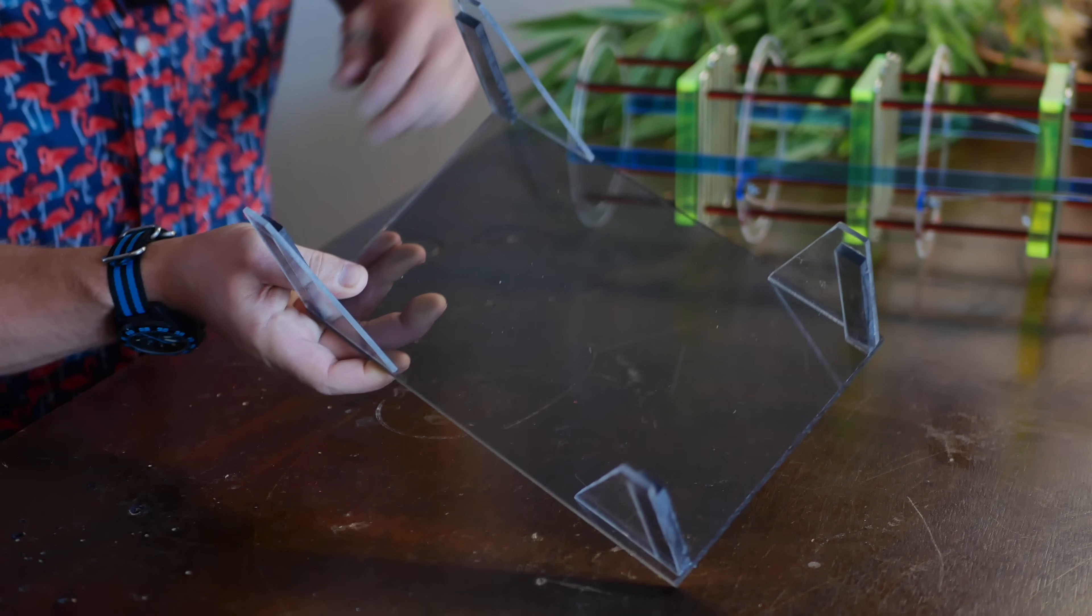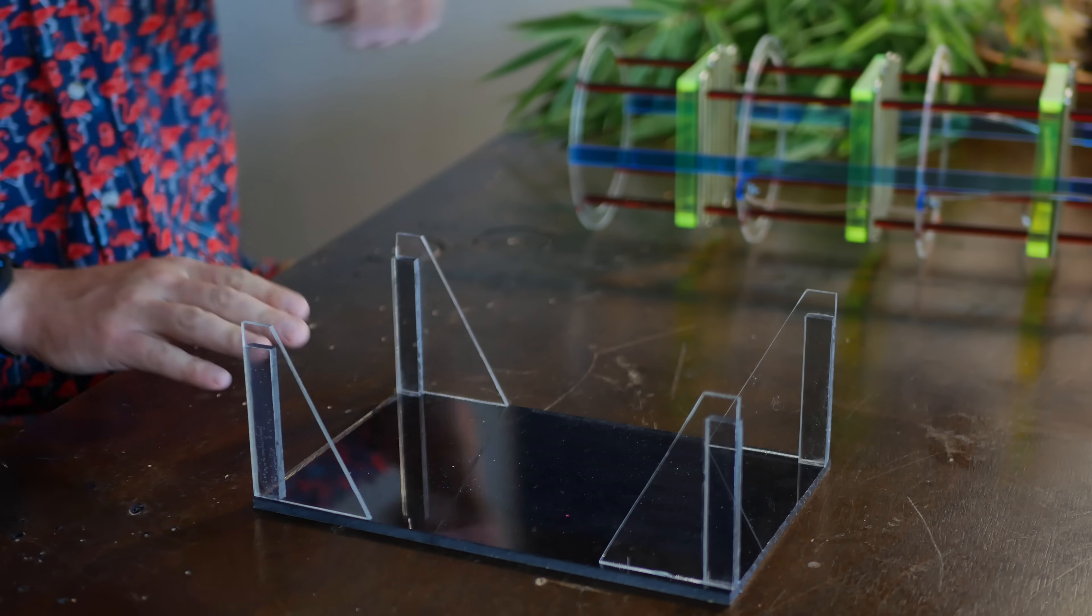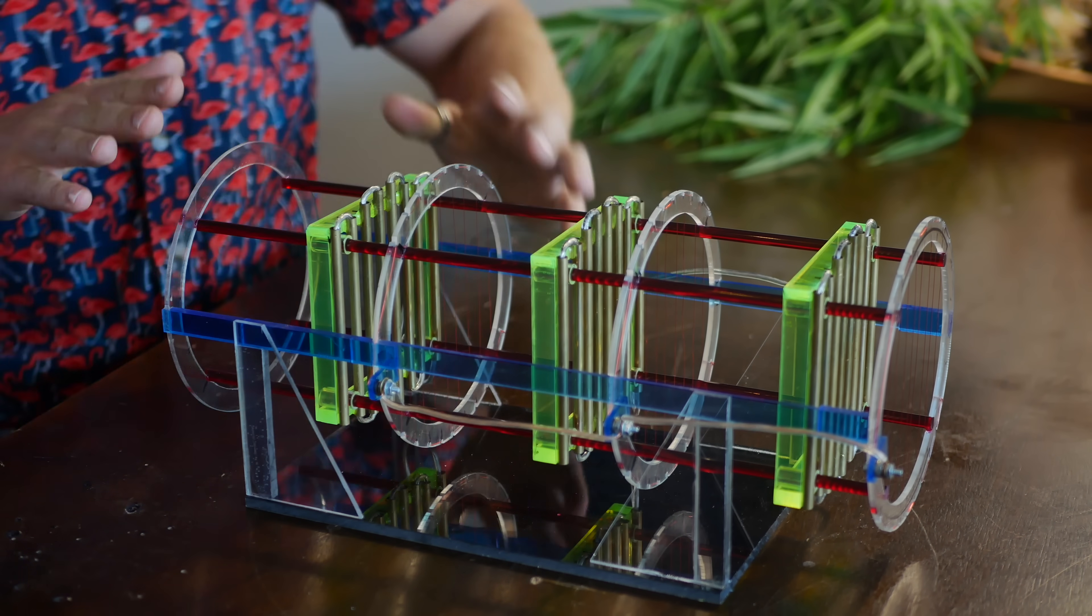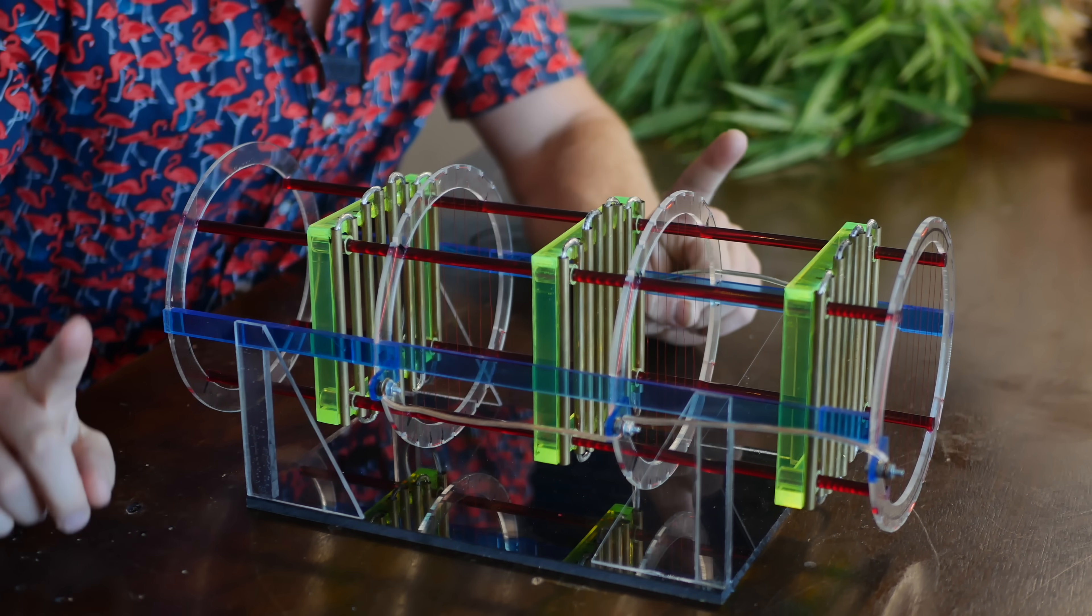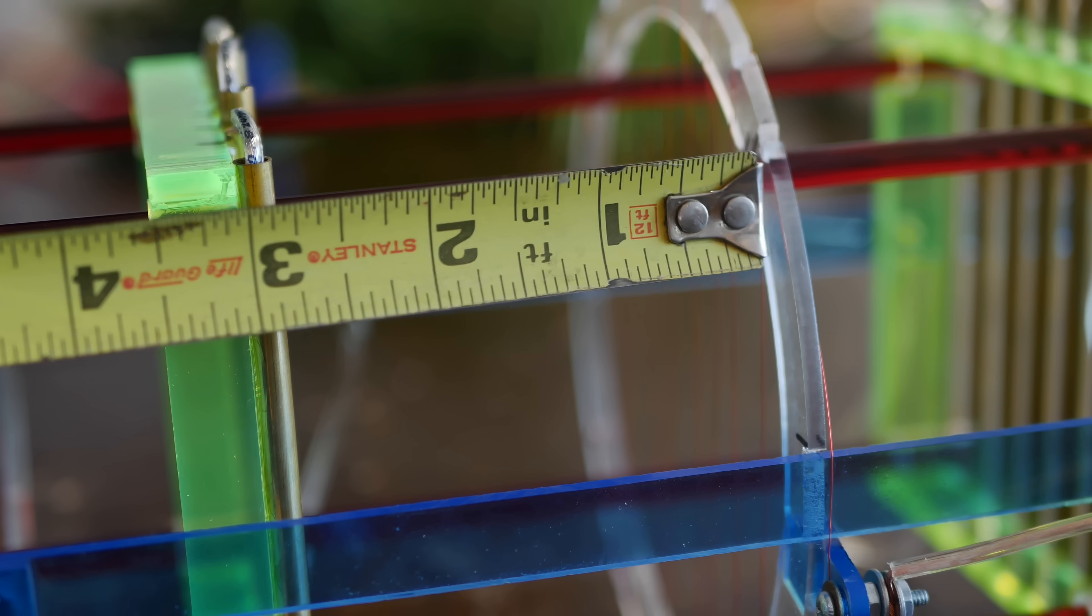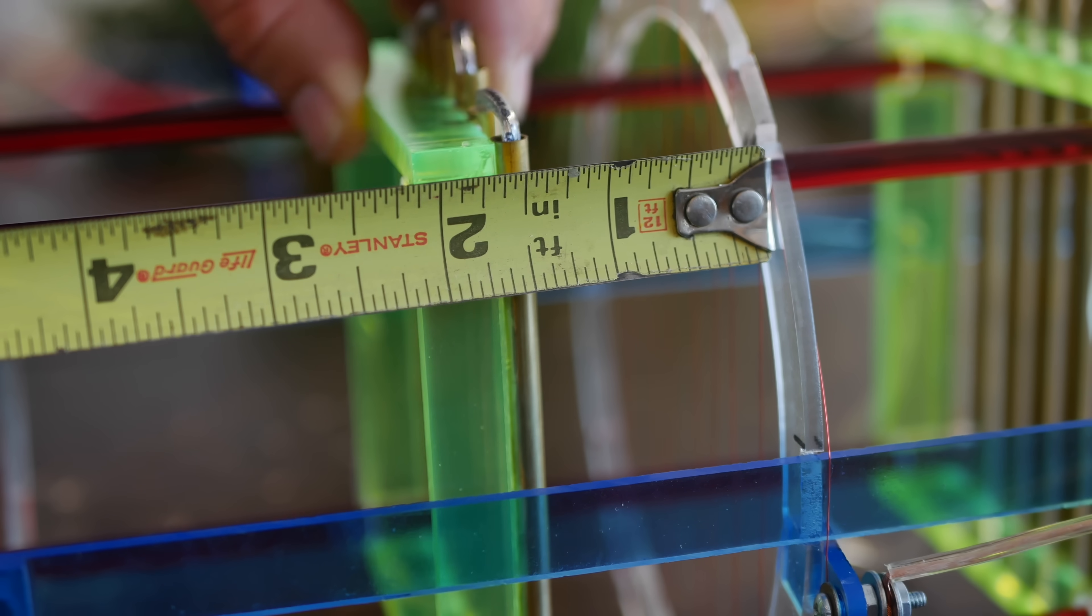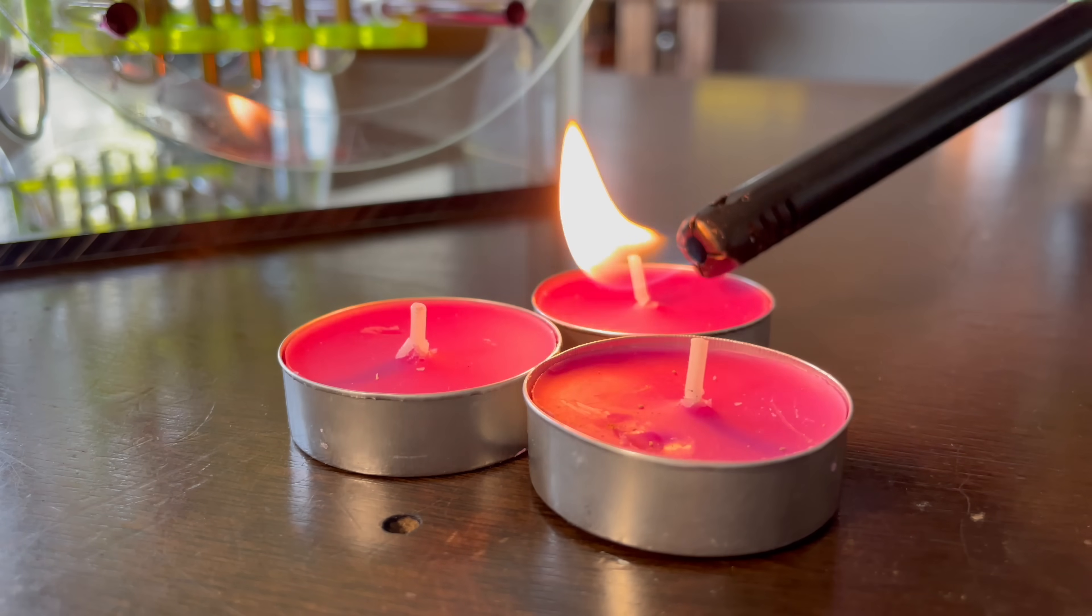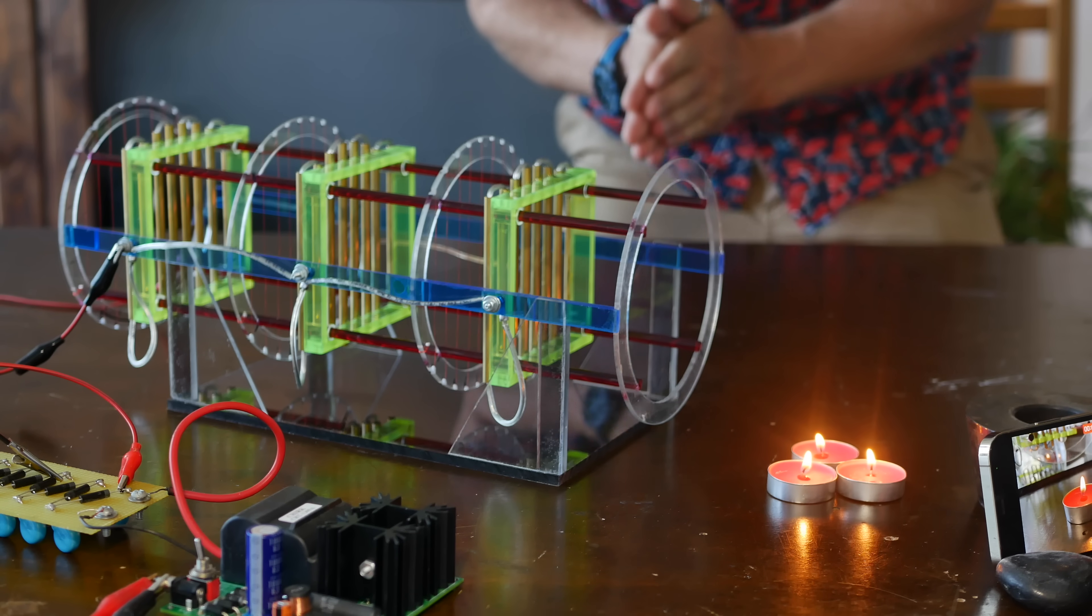For the upcoming testing, I built this stand that serves a couple of really important purposes. So, first of all, it holds everything in place, it stabilizes it, but most importantly, it provides electrical isolation from whatever surface it's being tested on. To start out, I set spacing randomly at an inch and a half, making sure that all sections were identical, and selected a random voltage of 20 kilovolts. Here goes nothing.